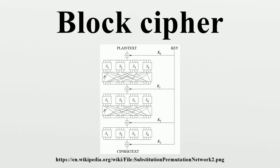Standard Model. Informally, a block cipher is secure in the standard model if an attacker cannot tell the difference between the block cipher and a random permutation. To be more precise, let E be an n-bit block cipher. Consider the following game: the person running the game flips a coin. If heads, he chooses a random key K and defines the function F equals EK. If tails, he chooses a random permutation pi on the set of n-bit strings and defines F equals pi. The attacker chooses an n-bit string X, and the person running the game tells him the value of F. This step is repeated a total of Q times. The attacker then guesses how the coin landed and wins if his guess is correct.